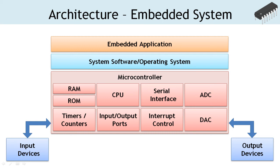The embedded software can be divided into two parts. One, the system software which comprises of drivers — for example, serial driver, display driver, etc. In the case of a complex system, a dedicated operating system is used instead of simple system software. Two, the application software that implements the functionality of the embedded system.